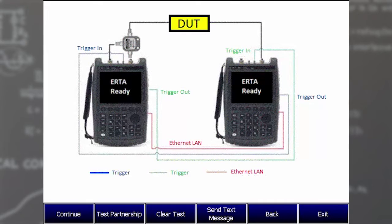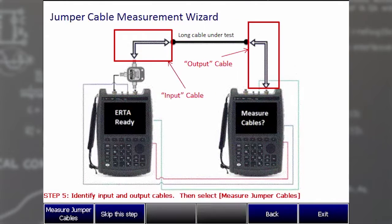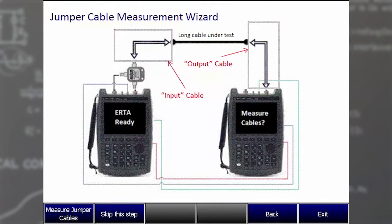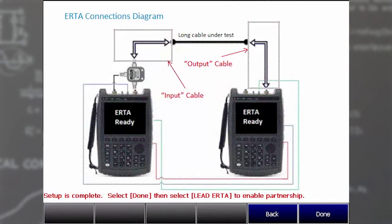and then we're going to test that partnership. Now we see three green checks. That means we're good to go, and then we're going to press Continue again. We can measure jumper cables if we were using them. We're not using jumper cables. We just have our DUT connected, so we're going to skip this step, press Continue, and then Done.